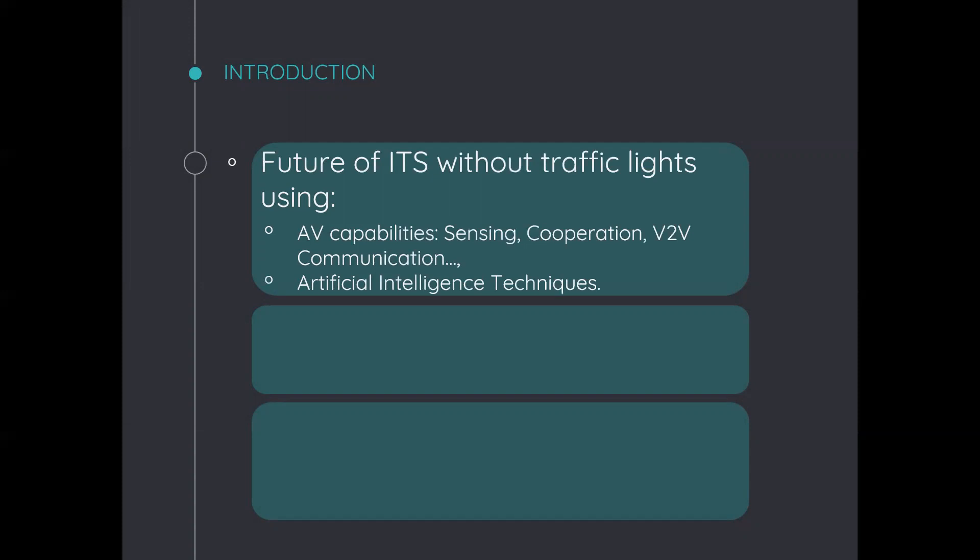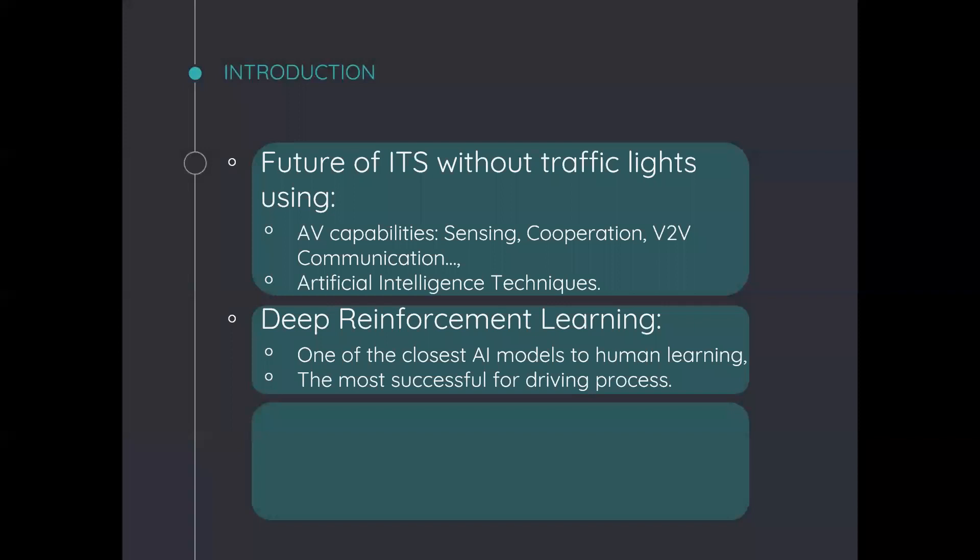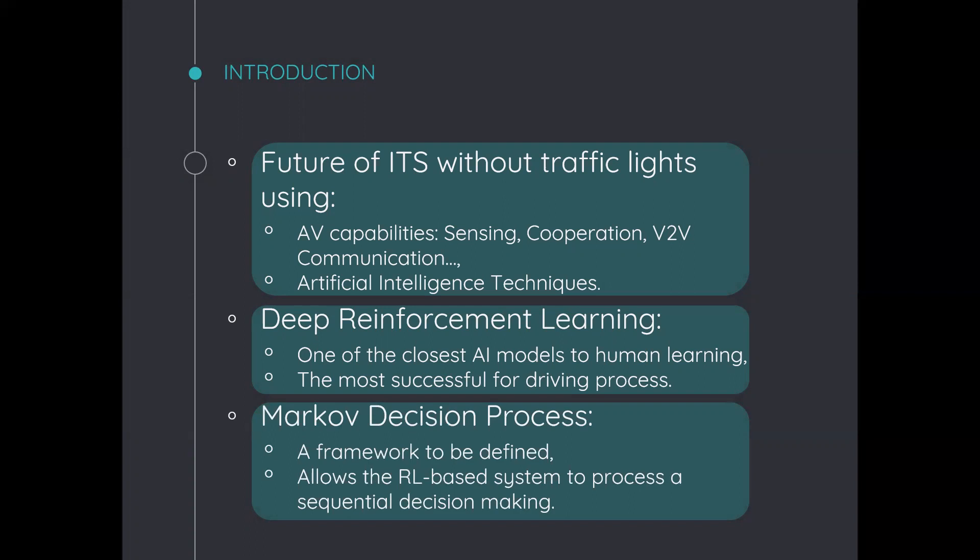Developing distributed traffic management architecture for a future without traffic lights based on autonomous vehicles capabilities and artificial intelligence techniques is a current trend in ITS research area. Deep reinforcement learning is one of the closest artificial intelligence model to human learning and the most successful one for driving process. Therefore, a Markov Decision Process needs to be defined in order to allow reinforcement learning based systems to process sequential decision making.